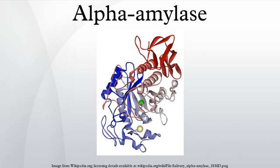In humans, all amylase isoforms link to chromosome 1p21. Salivary amylase is found in saliva and breaks starch into maltose and dextrin. This form of amylase is also called ptyalin; it will break large, insoluble starch molecules into soluble starches, producing successively smaller starches and ultimately maltose.